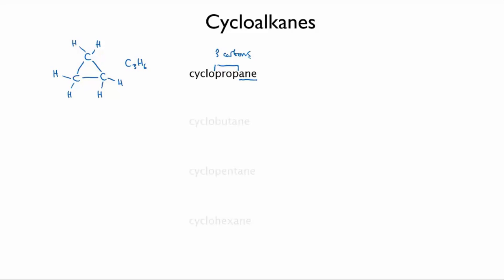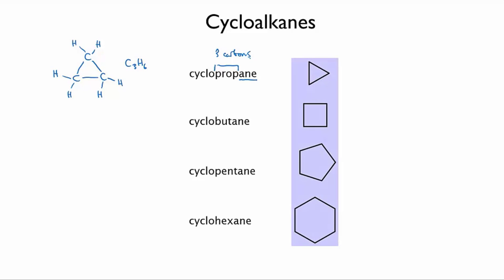Here are some more cycloalkanes, and here's how we draw them as stick structures. And this is the formula for a general cycloalkane with n carbons.